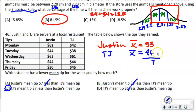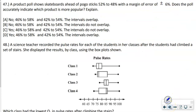You may also be asked about standard deviation — that's the sigma symbol in the calculator. A smaller standard deviation means the values are more clustered toward the center; a larger value means the values are more spread out.